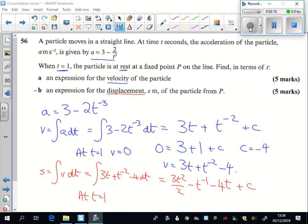At t equals 1, this is difficult to spot, but at t equals 1, it is at P. So we want to know how far away from P it is. So at t equals 1, s equals 0 again.